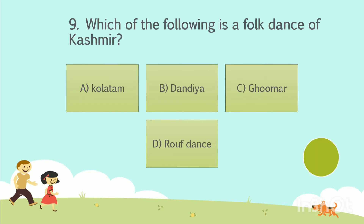To the 9th question now. Which of the following is a folk dance of Kashmir? Option A: Kolatam. Option B: Dandiya. Option C: Ghoomer. Option D: Roof dance. Your time starts now. The answer is Option D: Roof dance.